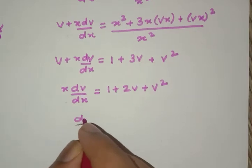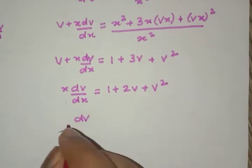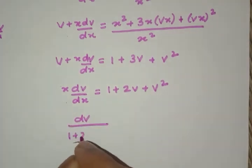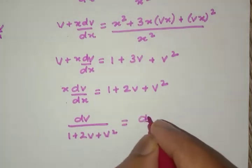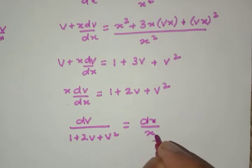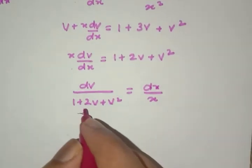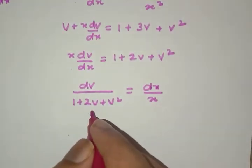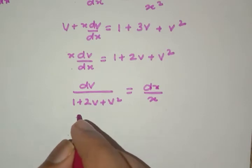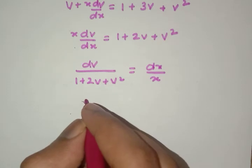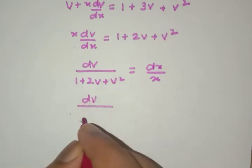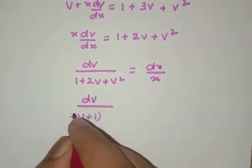And now dv/(1 + 2v + v²) = dx/x. This is equal to dv/(v + 1)² = dx/x.